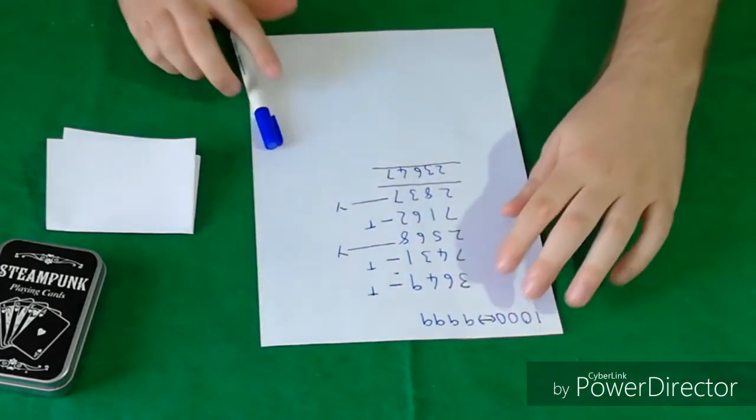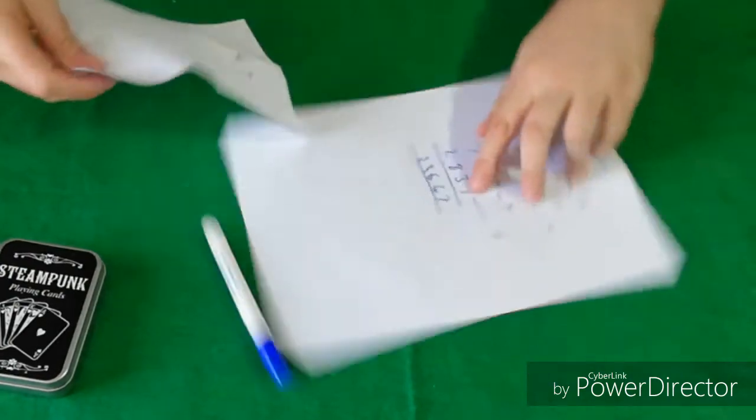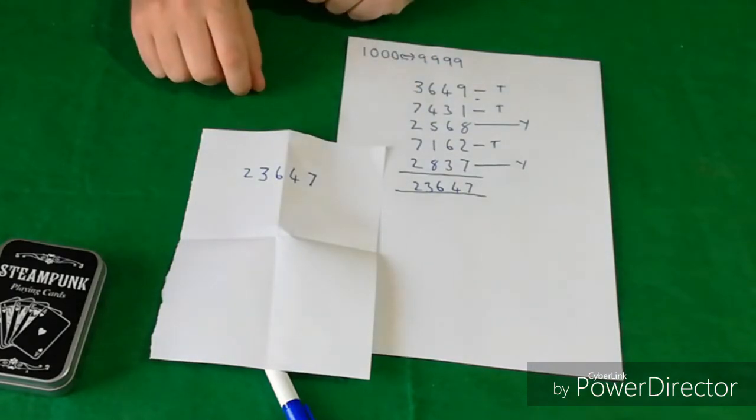They had a free choice of three of these numbers and somehow magically you got exactly the same prediction when you wrote it down. 23647.